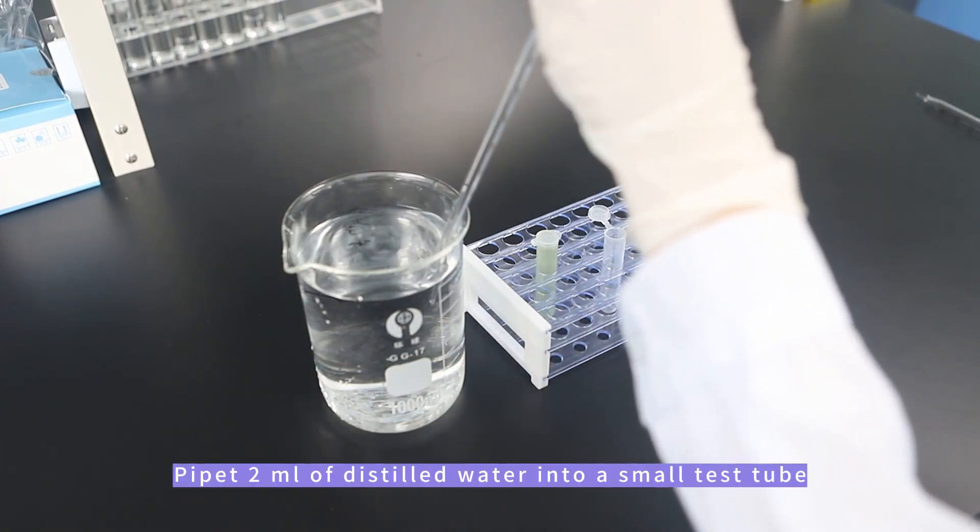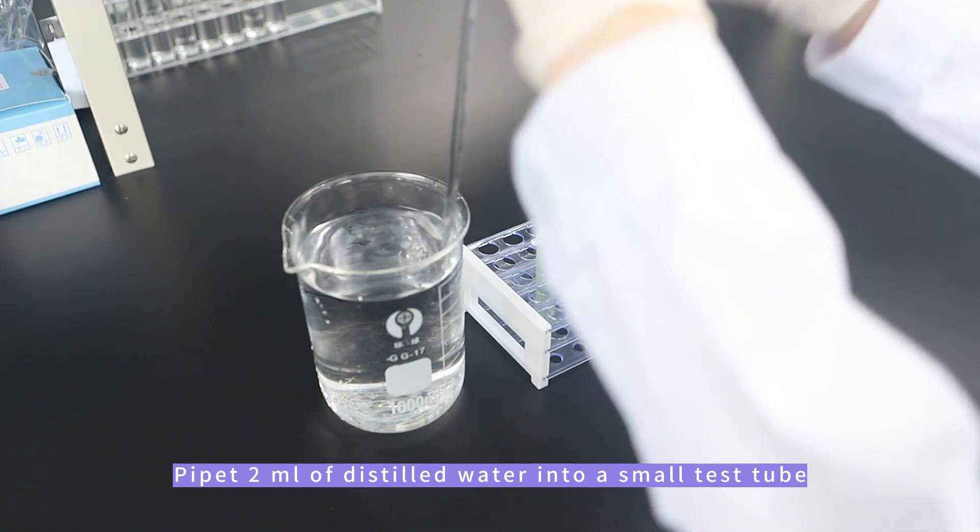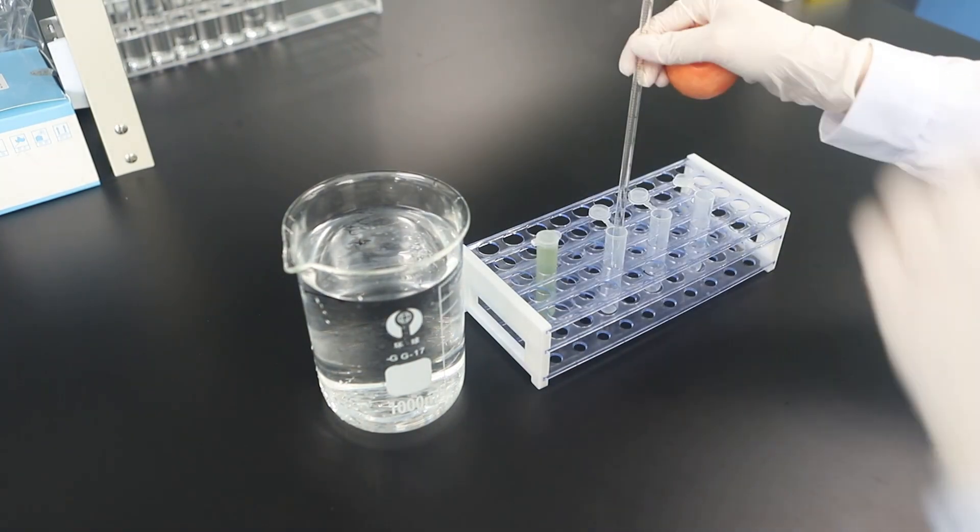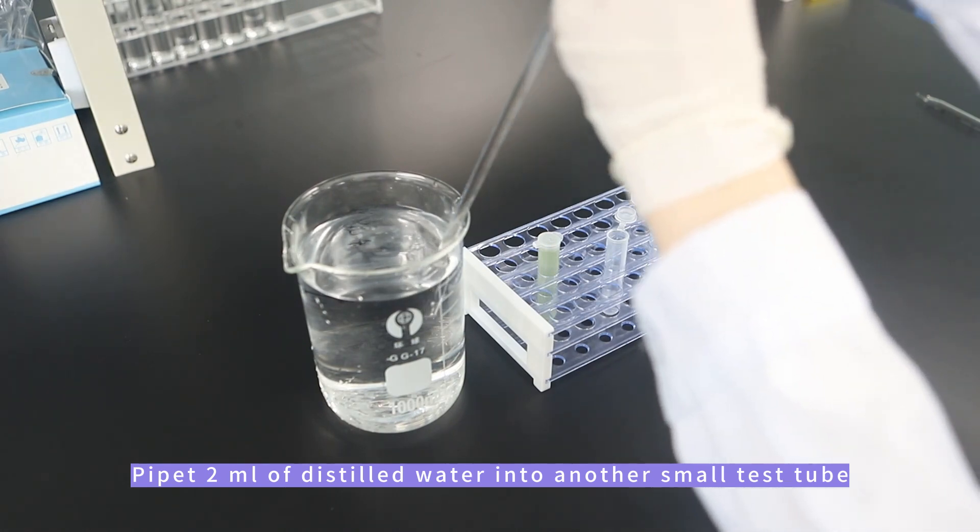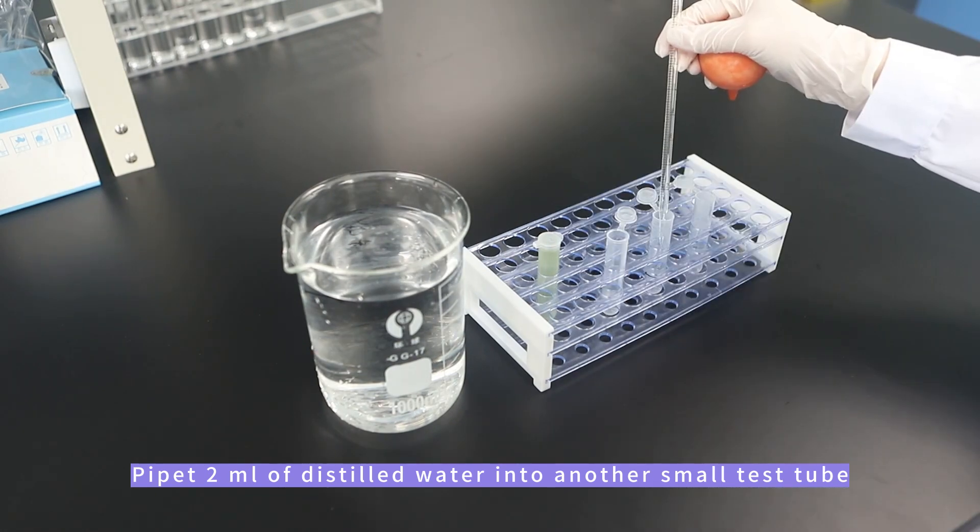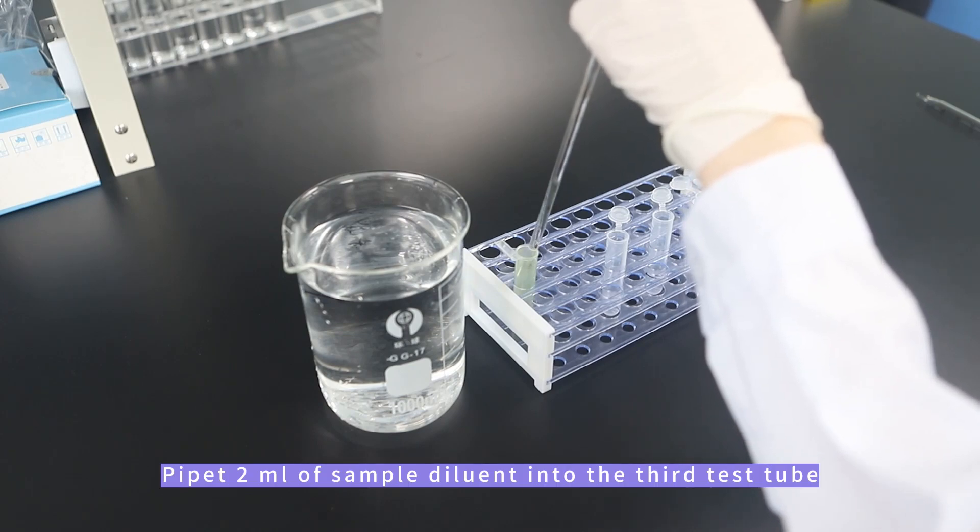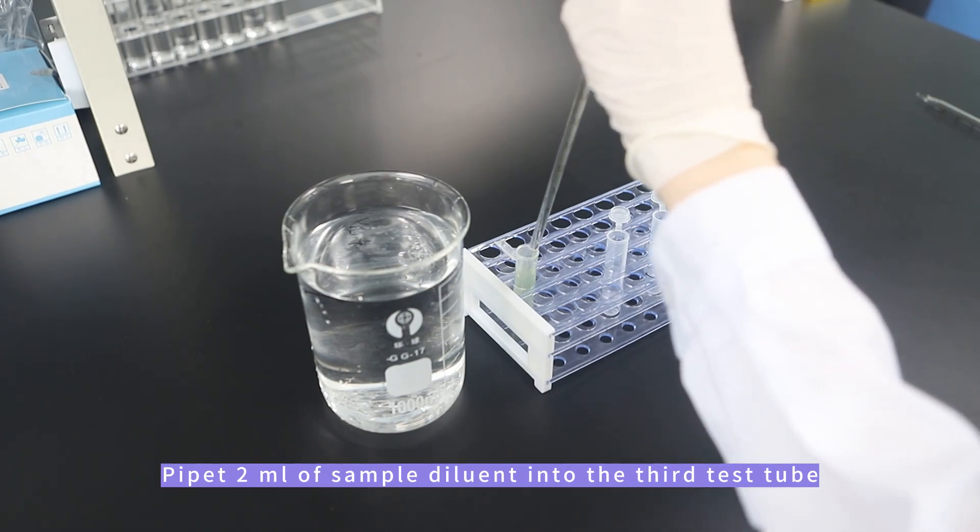Pipe 2ml of distilled water into a small test tube. Pipe 2ml of distilled water into another small test tube. Pipe 2ml of sample diluent into the third test tube.